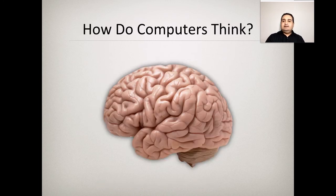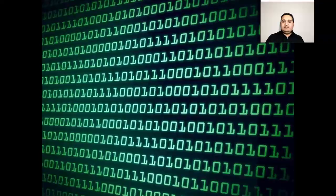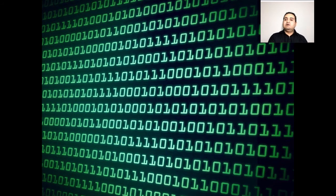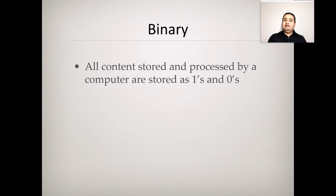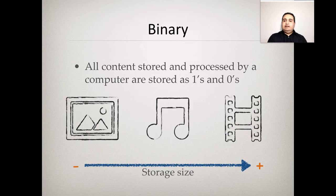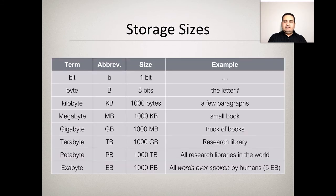Computers understand only zeros and ones — binary data — representing on/off, true/false, or yes/no. To store data, sizes range from plain text characters at the smallest level, up through images and audio, with videos consuming the most storage. There is a breakdown of storage size units — from bits and bytes upward. The largest commonly referenced unit is the zettabyte, though it is not always shown in diagrams.